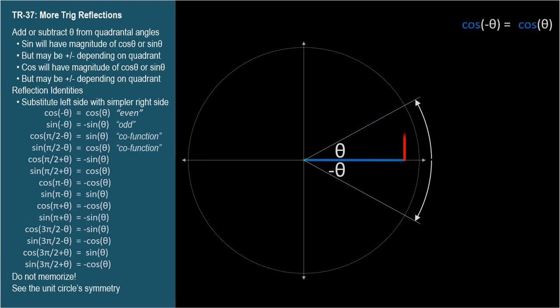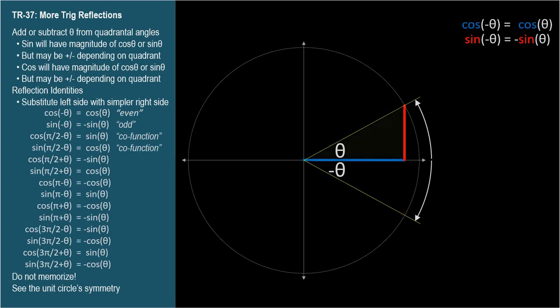And their sines have the same magnitude but are in opposite directions, so sine of negative theta equals negative sine theta. Let me show the triangle for theta in green — its short sides are the cosine and sine of theta.